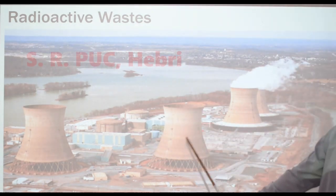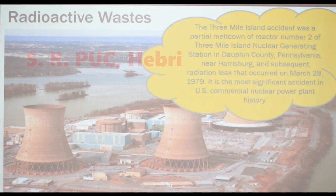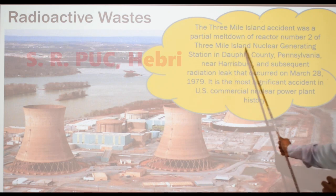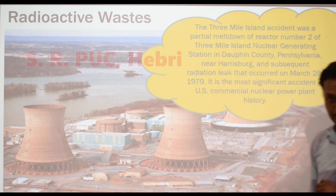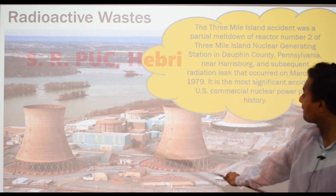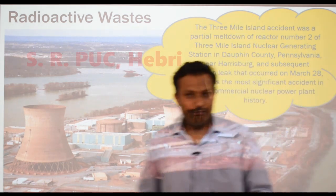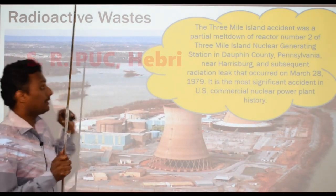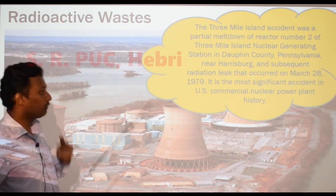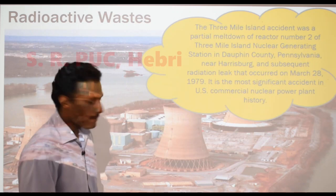These are nuclear reactors at Pennsylvania. One of the nuclear reactors actually had a leakage. This is known as the Three Mile Island accident, caused due to the partial meltdown of reactor number two. Three Mile Island is the name of the place where the reactors are located, in Pennsylvania, USA. This happened on March 28, 1979 — the first incident which made the scientific community realize the greater risk of nuclear power reactors.